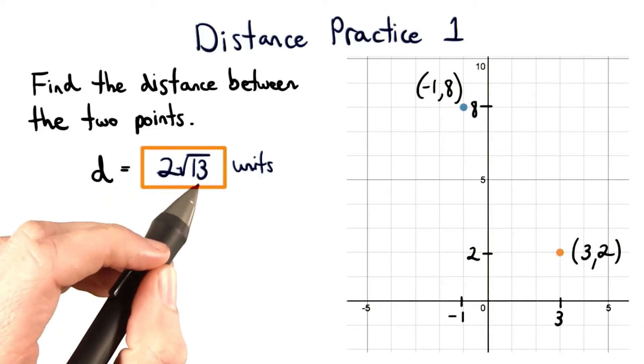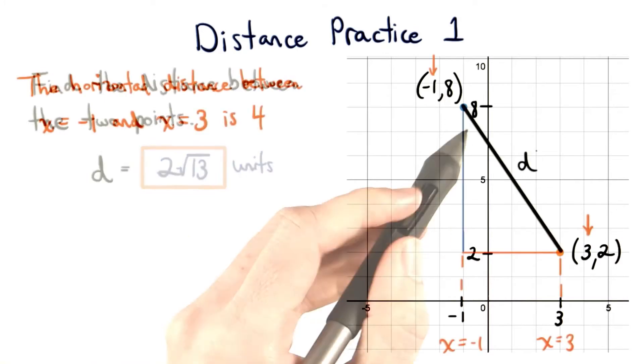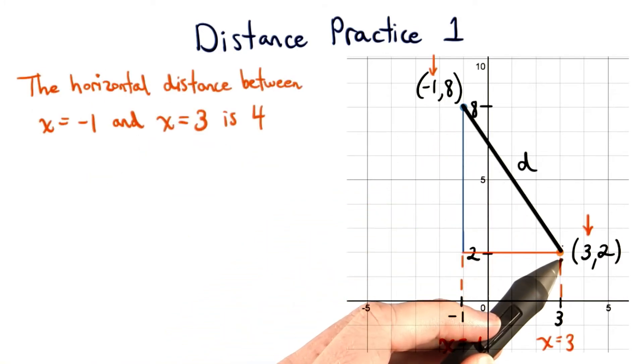The answer is 2 times the square root of 13. Great thinking if you found this number. We want to find the distance between these two points.